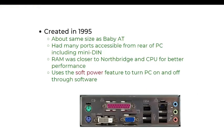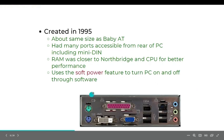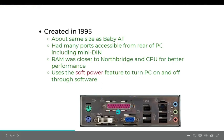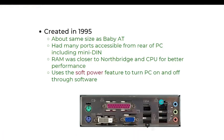Looking more into the IBM AT board: it was about the same size as the Baby AT. It had many ports accessible from the rear of the PC, including mini-DIN ports. RAM was closer to the Northbridge and CPU for better performance. It uses the soft power feature to turn the PC on and off through software. We can see some of its ports here: the parallel port, the DVI port, the VGA port usually used for projection, a few USB ports, a network port also known as Ethernet, and basic input/output audio ports.